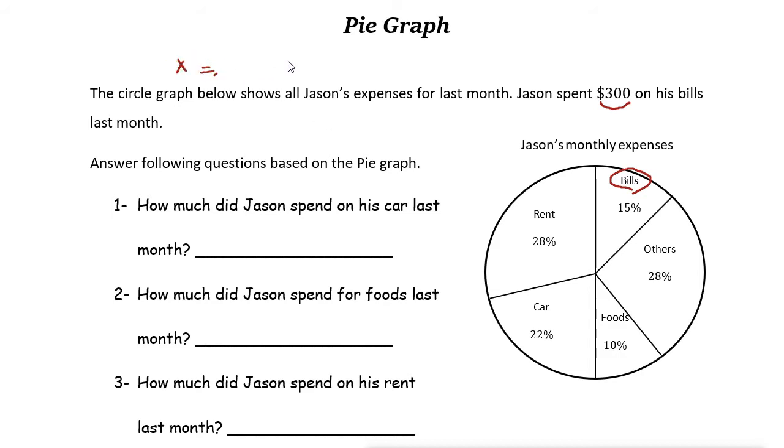Then $300 is just 15 percent of X. So $300 is 15 percent of X. Now if you write an equation you can solve for X.